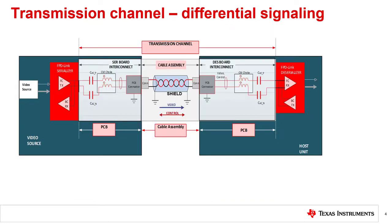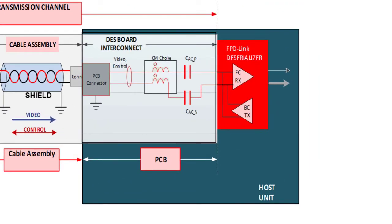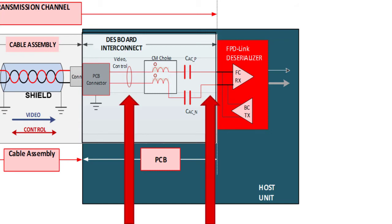In this example I'm showing a differential channel consisting of the serializer PCB with its onboard components, the differential cable assembly, and the deserializer PCB with its onboard components. On the PCB I'm showing a simplified diagram of a differential signal path from a serializer or deserializer IC to its connector. The signal path consists of a PCB differential trace, the AC coupling capacitors, the optional common mode choke, and a differential connector that connects the PCB to the differential cable.